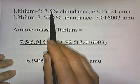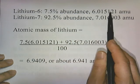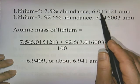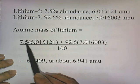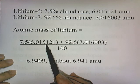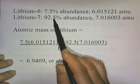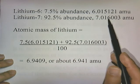So, 7.5% abundance, and of these 7.5 atoms, they weigh this much. So 7.5 times 6.015121. And then 92.5 of the lithium isotopes that exist weigh that much, so 92.5 times that.